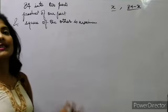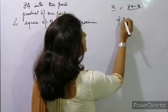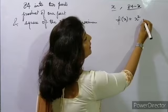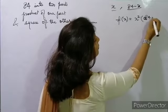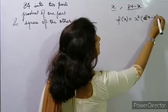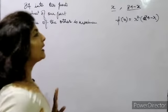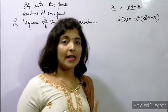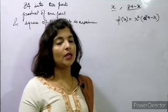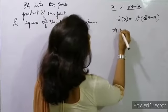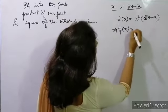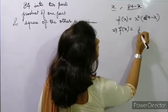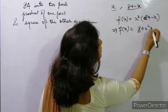It is given that the product of one part and the square of the other part is maximum. So we take f(x) = x²(84 - x), which gives f(x) = 84x² - x³.